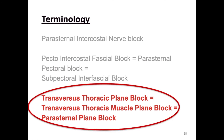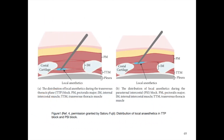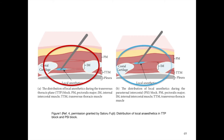We come now to the subject of this presentation, the transverse thoracic plane block, which is also called transverse thoracic muscle plane block or parasternal plane block. For simplicity, from now on let's use the term TTP block. The TTP block is in contrast to the previously described parasternal intercostal nerve blocks or PIN blocks, where local anesthetics are injected between the pectoralis major and the internal intercostal muscle.